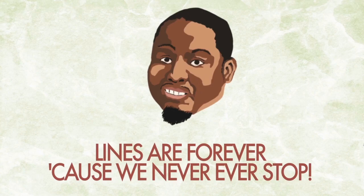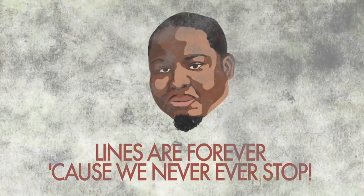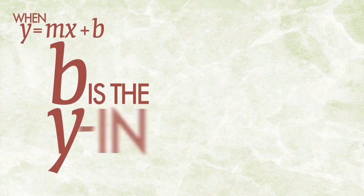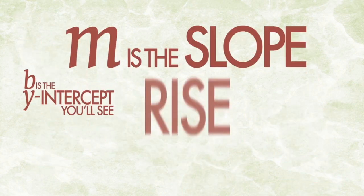You know we make it pop, lines off forever cause we never ever stop. When Y equals MX plus B, B is the Y-intercept you'll see, M is the slope rise over run. Then wait until we stop but the day will never come.